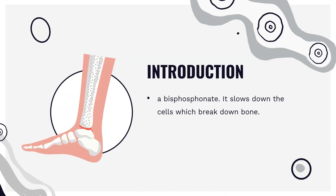What is risedronate? Risedronic acid, often used as its sodium salt risedronate sodium, is a bisphosphonate. It slows down the cells which break down bone. It's used to treat or prevent osteoporosis and treat Paget's disease of bone. It is taken by mouth. It was patented in 1984 and approved for medical use in 1998.